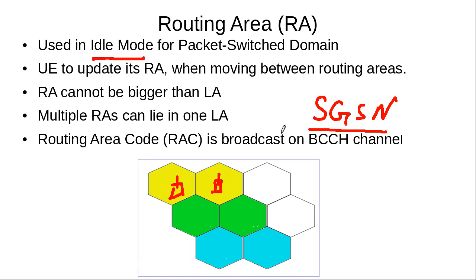In the packet switch domain, the SGSN is equivalent to the MSC along with the VLR. The routing area update information is stored in the SGSN. The purpose of routing area updates — rather than updating the network each time a mobile changes cells — is to reduce signaling load. The mobile knows its routing area by monitoring the BCCH channel, where the routing area code is broadcast, and then informs the SGSN when it changes.